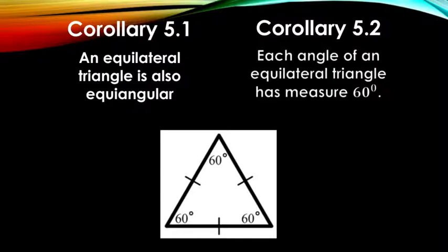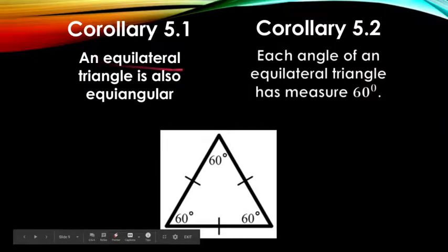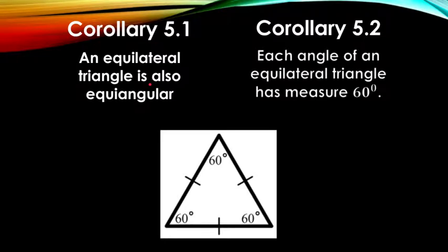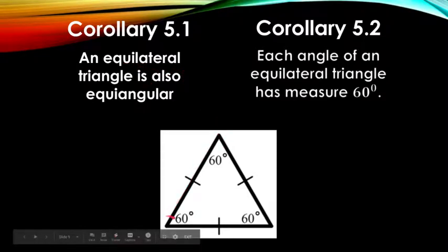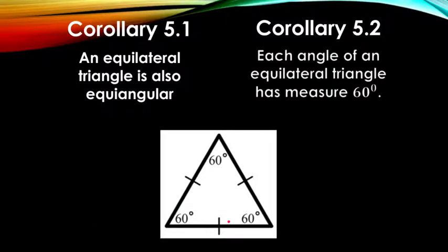If we have an equilateral triangle, an equilateral triangle is also equiangular. When we say equilateral, all sides are equal. When we say equiangular, all angles are equal. Equilateral stands for equal sides. Equiangular means equal angles.